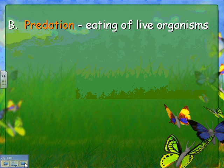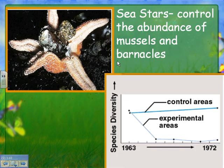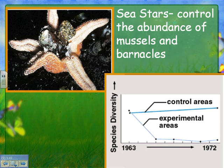Predation is the eating of live organisms, and one effect is population control. For example, sea stars control the abundance of mussels and barnacles. A sea star will actually digest the muscle that holds a shellfish's shell together — which is kind of gross — and as that gets digested the shell starts to open, and then the sea star eats the insides.